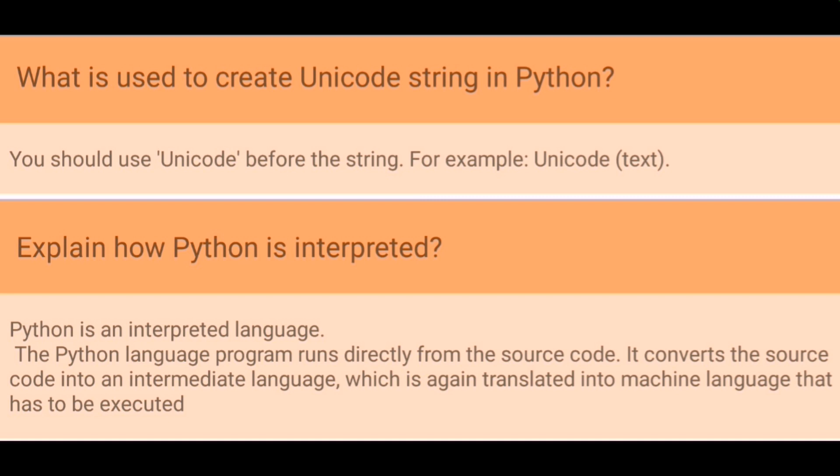Explain how Python is interpreted. Python is an interpreted language. The Python language program runs directly from source code. It converts the source code into an intermediate language which is again translated into machine language that has to be executed.